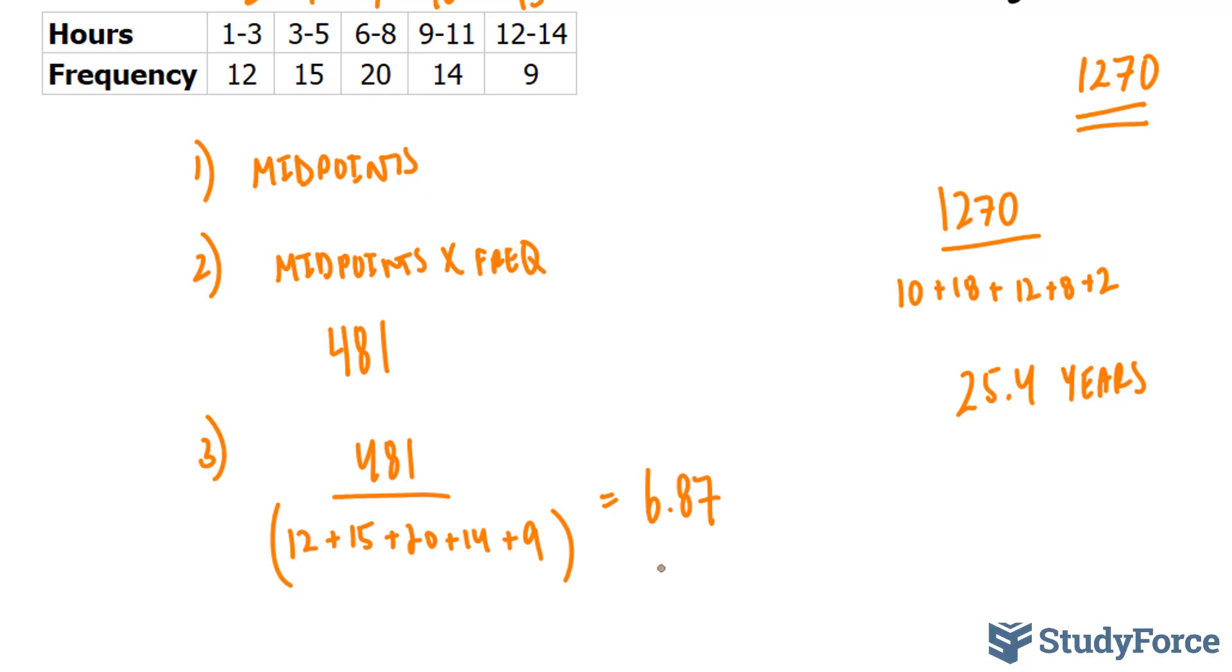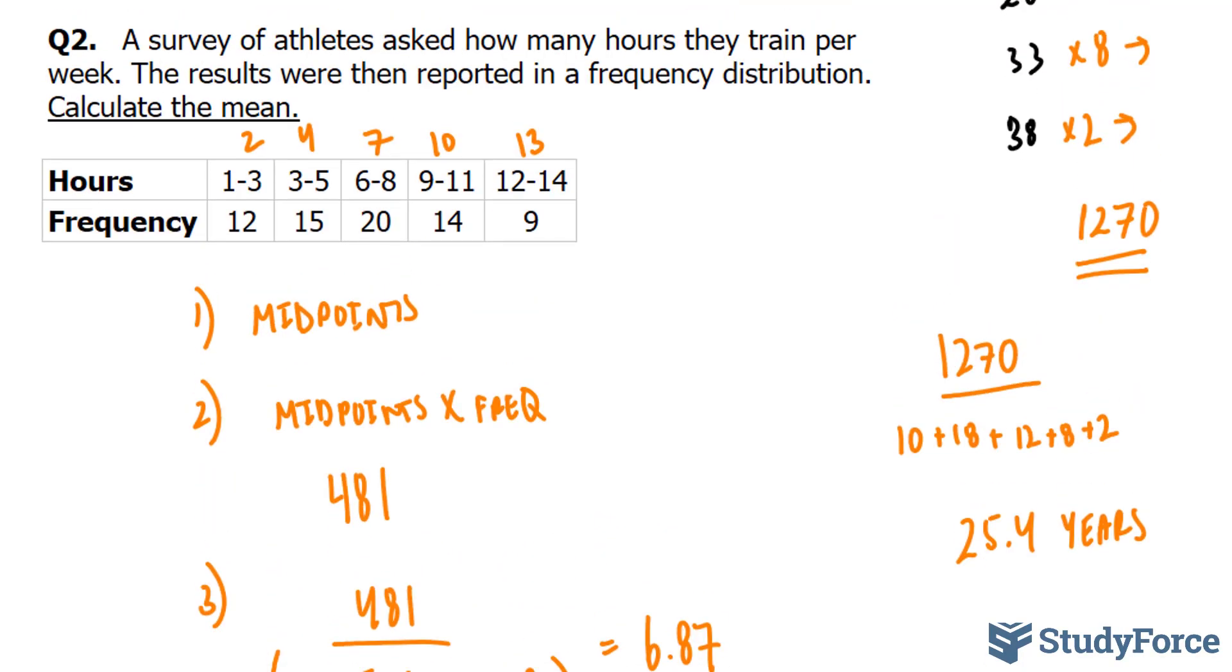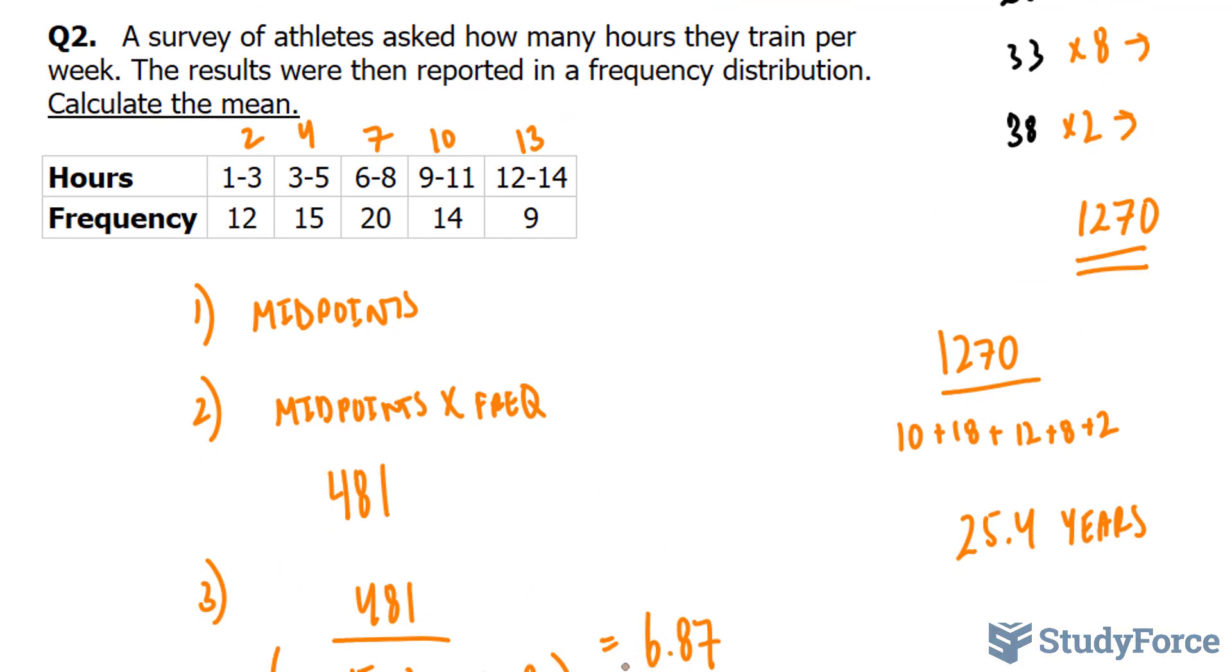So what does this mean? For the people that were surveyed, on average, they will train 6.87 hours. And so there you have it. That is how to calculate the mean for grouped data.